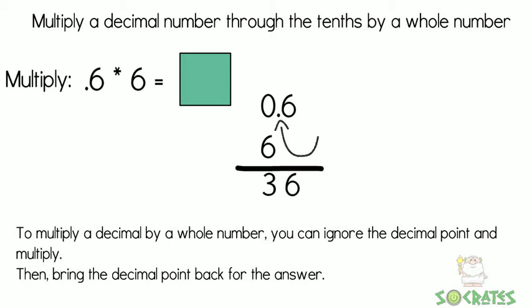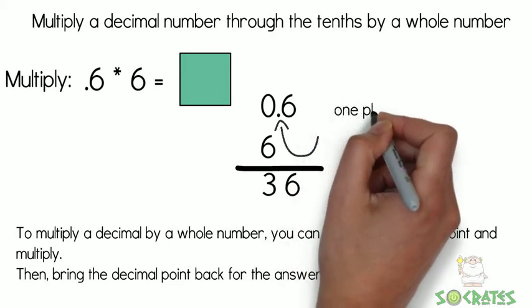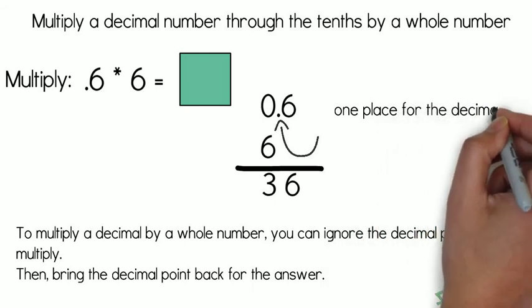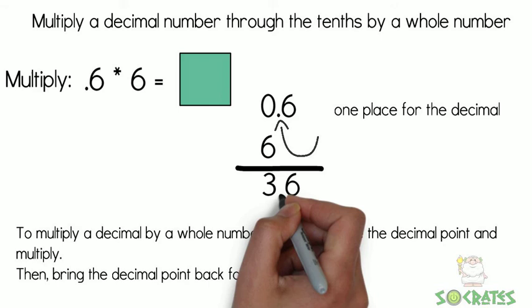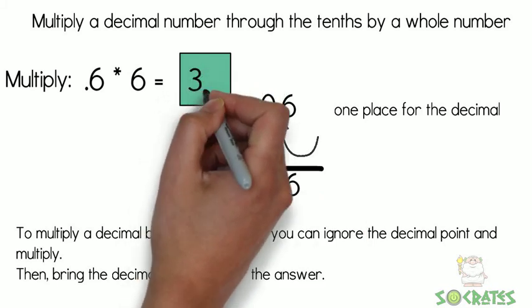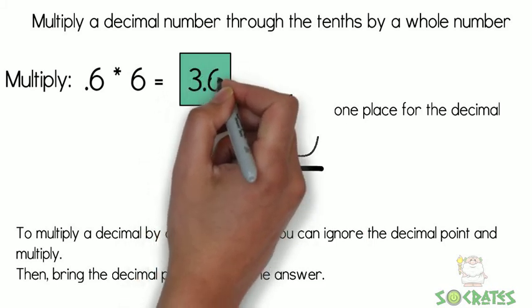It is one place over. So we're going to move the decimal point for our answer on the other side of the 6, giving us 3.6. So our answer for 0.6 times 6 is 3.6.